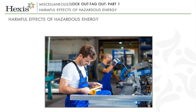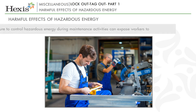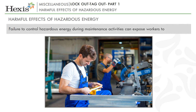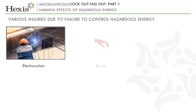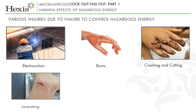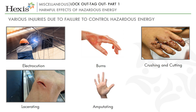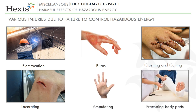Let us now learn the harmful effects of hazardous energy. Workers servicing or maintaining machines or equipment may be seriously injured or killed if hazardous energy is not properly controlled. Injuries resulting from the failure to control hazardous energy during maintenance activities can be serious or fatal. Injuries may include electrocution, burns, crushing, cutting, lacerating, amputating or fracturing body parts, and others.